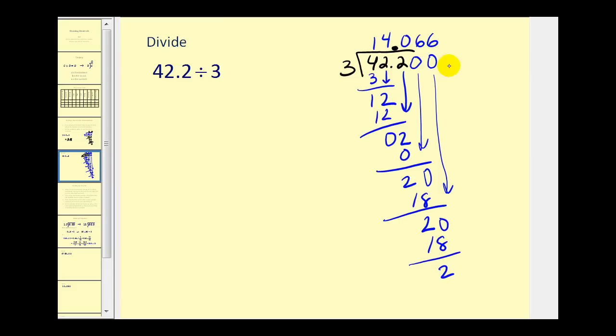6 times 3 is 18. We get 2, add another zero, and you can kind of see what's happening here. We keep getting 20, therefore, this 6 will continue to repeat. And so what we can do is say the quotient is 14.06, and since the 6 repeats, we put a bar over the 6.